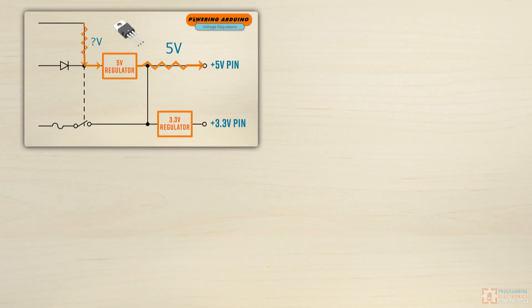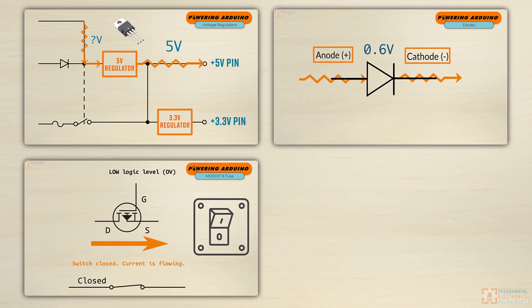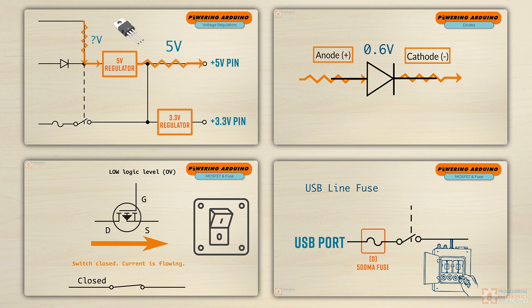So we're going to talk about voltage regulators, diodes, P-channel MOSFET switches, and USB line fuses.